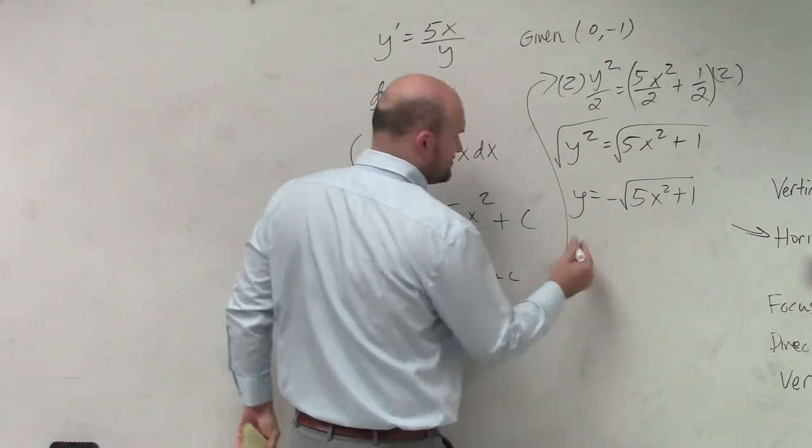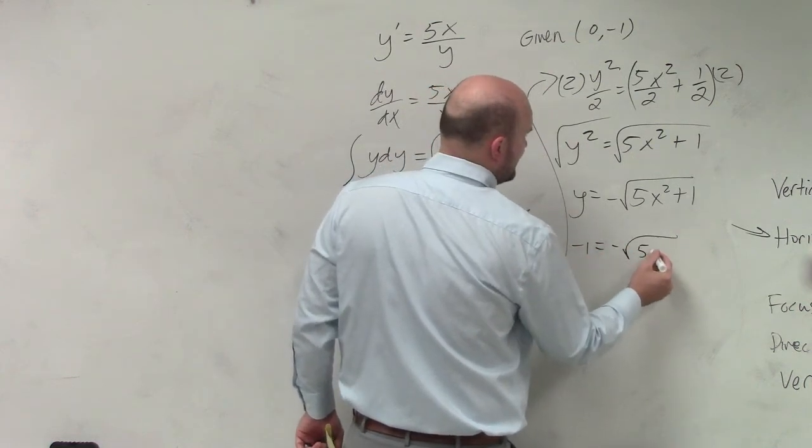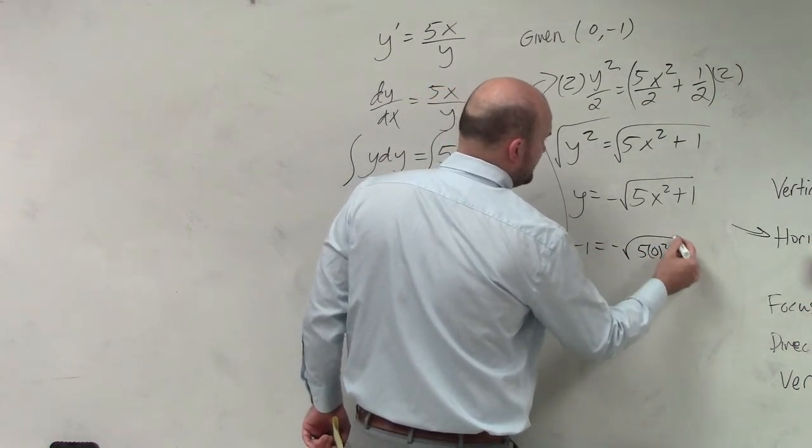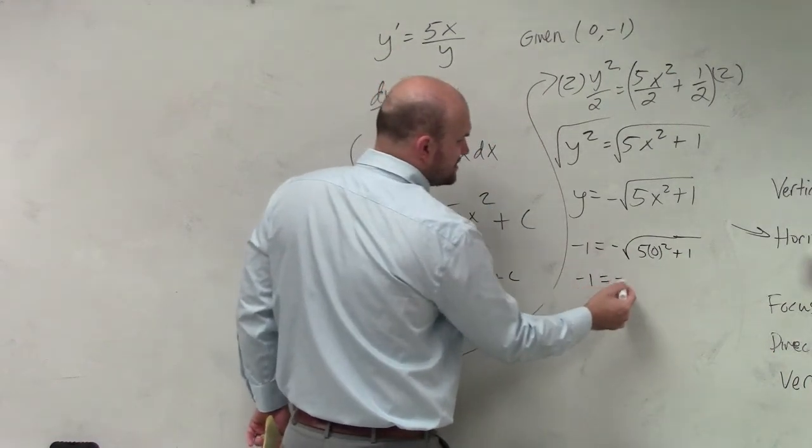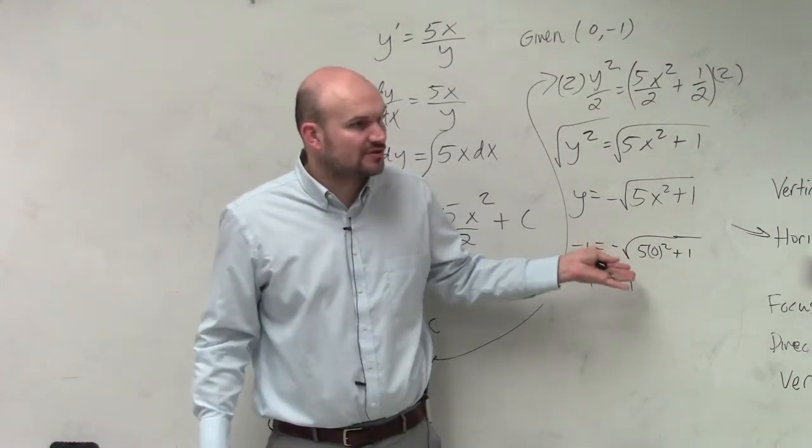So what you can do is plug in negative 1 equals negative square root of 5, 0 squared plus 1. And you get negative 1 equals negative 1. Right? So you can always plug your point back into your equation to make sure it's correct.